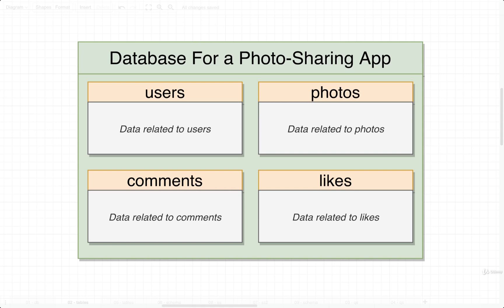In the last video, we said that we were going to work through the design of a database for a photo sharing application, and I showed you this diagram right here. We should probably make a database that has four different tables inside of it: a list of users, a list of photos, a list of comments, and a list of likes. The likes table is for implementing some kind of liking feature inside of a photo sharing app.